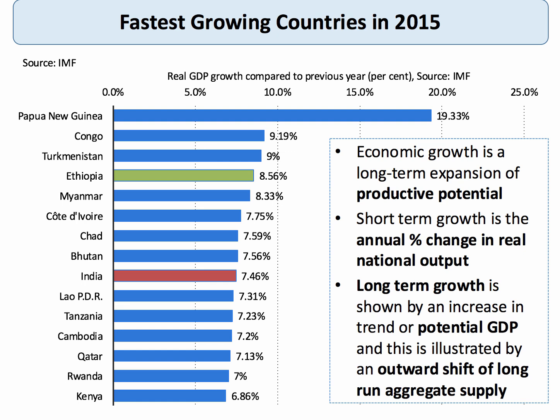However, we can make a distinction between short-term economic growth — growth of real national output in the near term — and long-term economic growth, which is the increase in the trend or the potential national output. And that's oftentimes shown by an outward shift of a country's long-run aggregate supply curve.